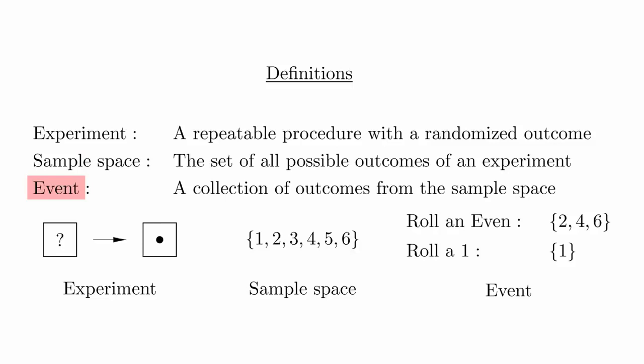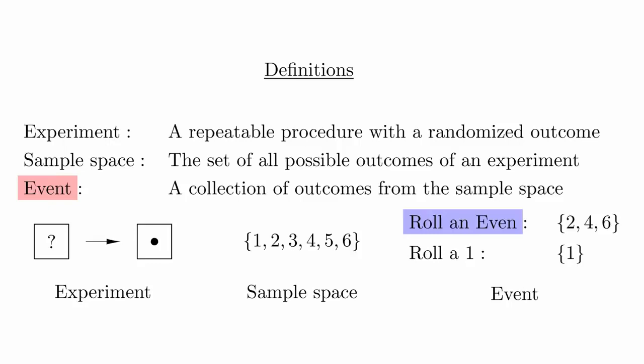An event is some collection of outcomes from the sample space. For example, when rolling a die, we can say that rolling an even number is an event. Events are also sets, so we must use set notation for these as well. We can also have events that have a single outcome, such as rolling a 1. If the die is perfectly fair, we would expect that the probability of each outcome is the same. When this happens, we say that the outcomes are equiprobable.